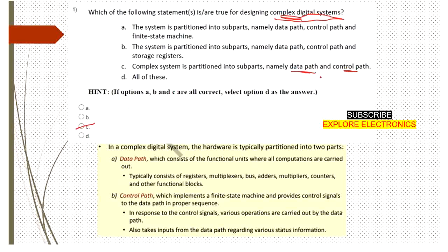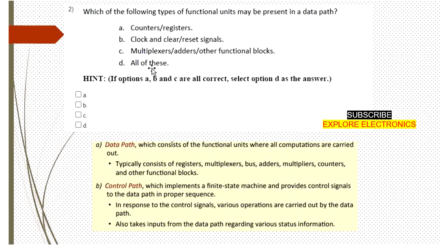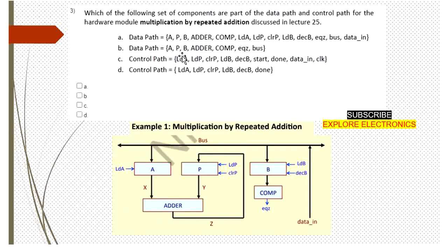The next question asks which of the following types of functional units may be present in a data path. The data path consists of counters and registers. Clock, clear, and reset signals are part of the control unit. Multiplexers, adders, and other functional blocks can be present in the data path. That's why the answer is A and C.